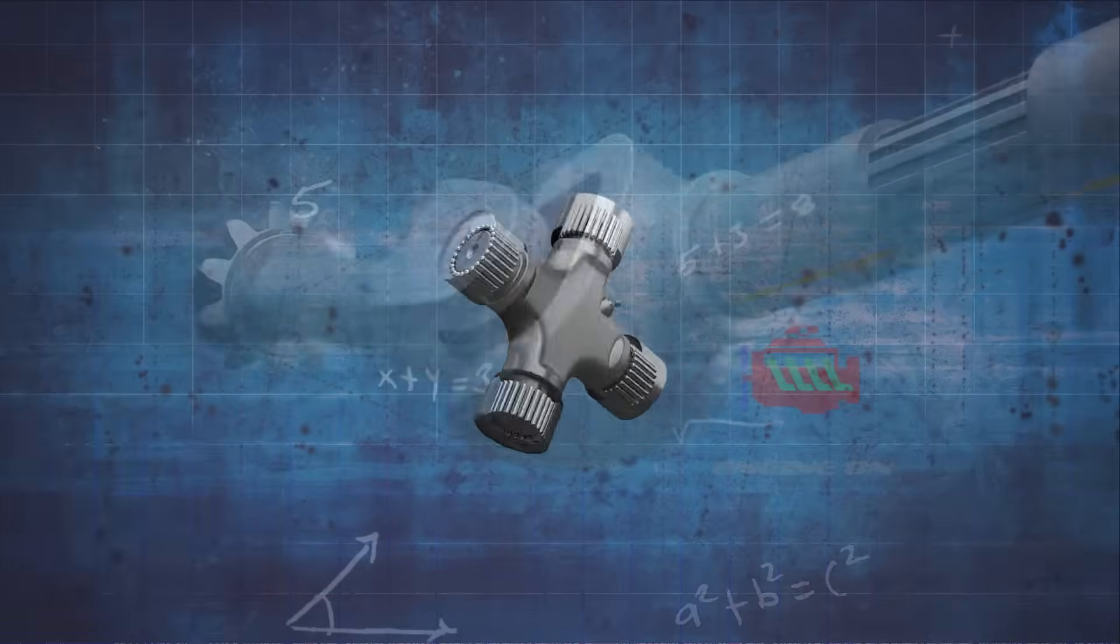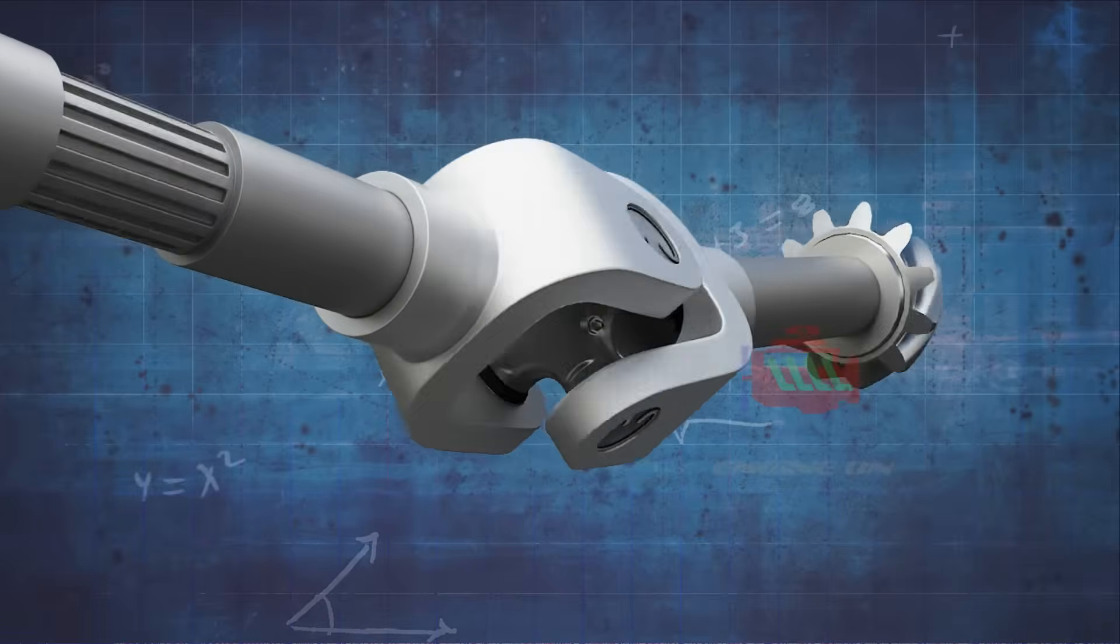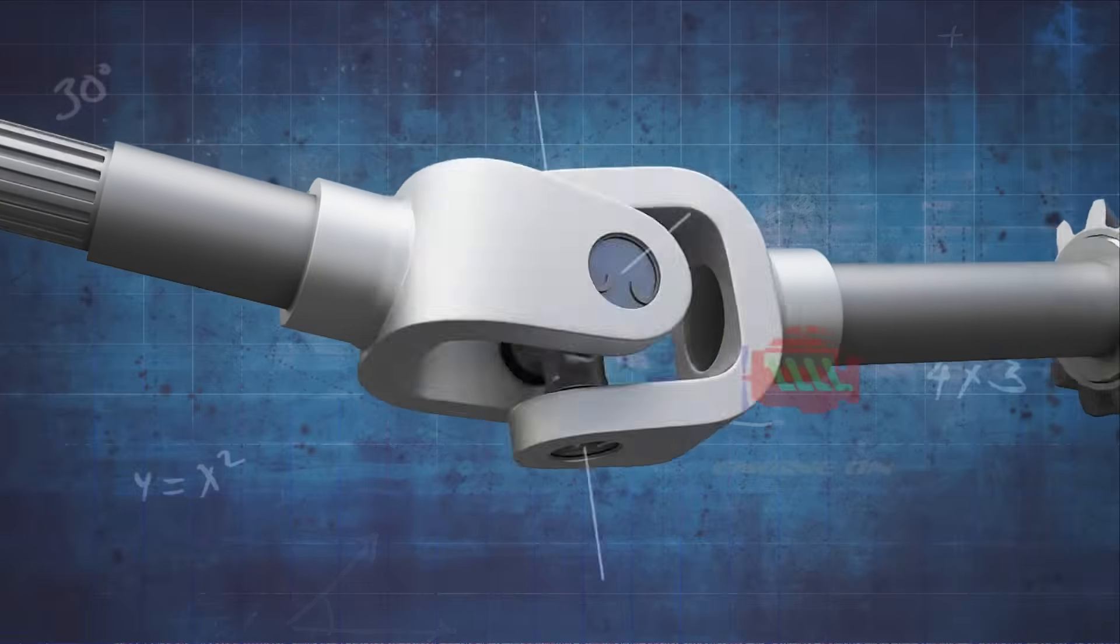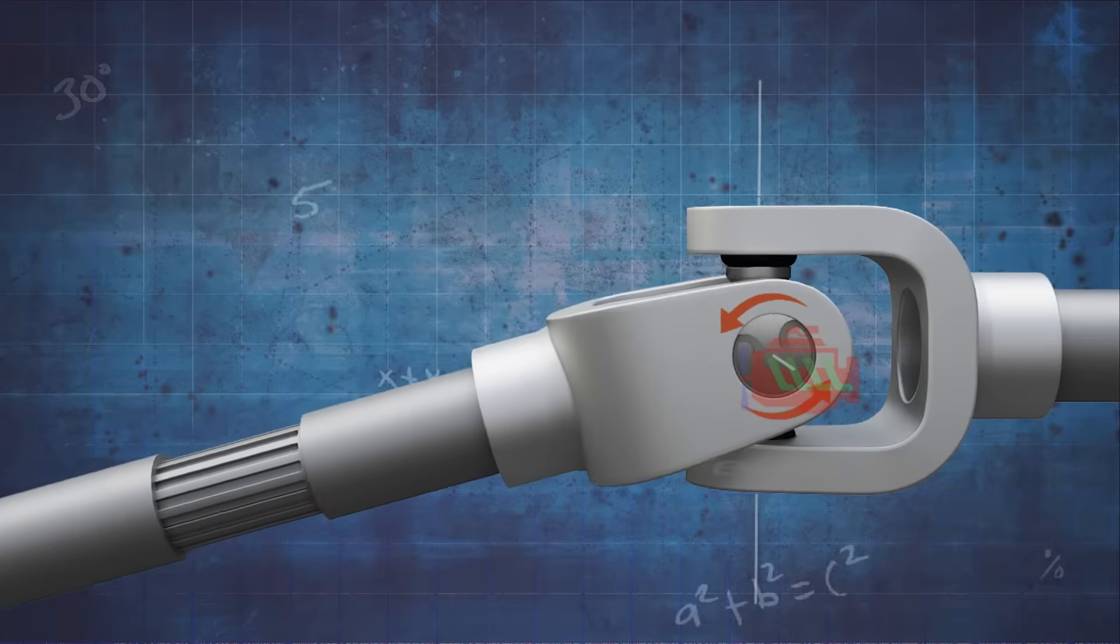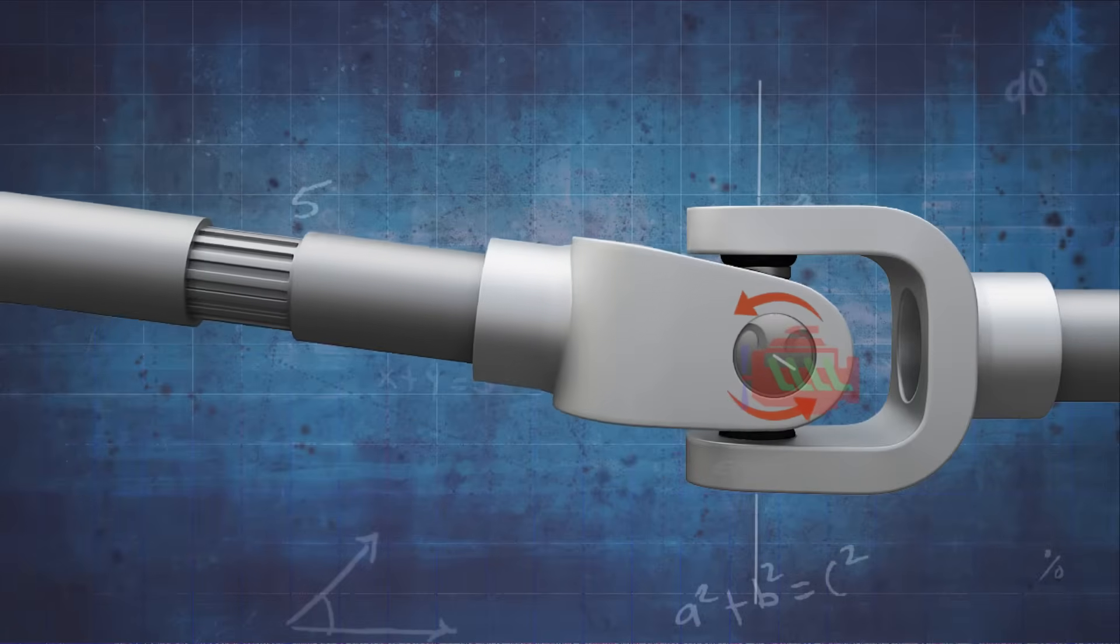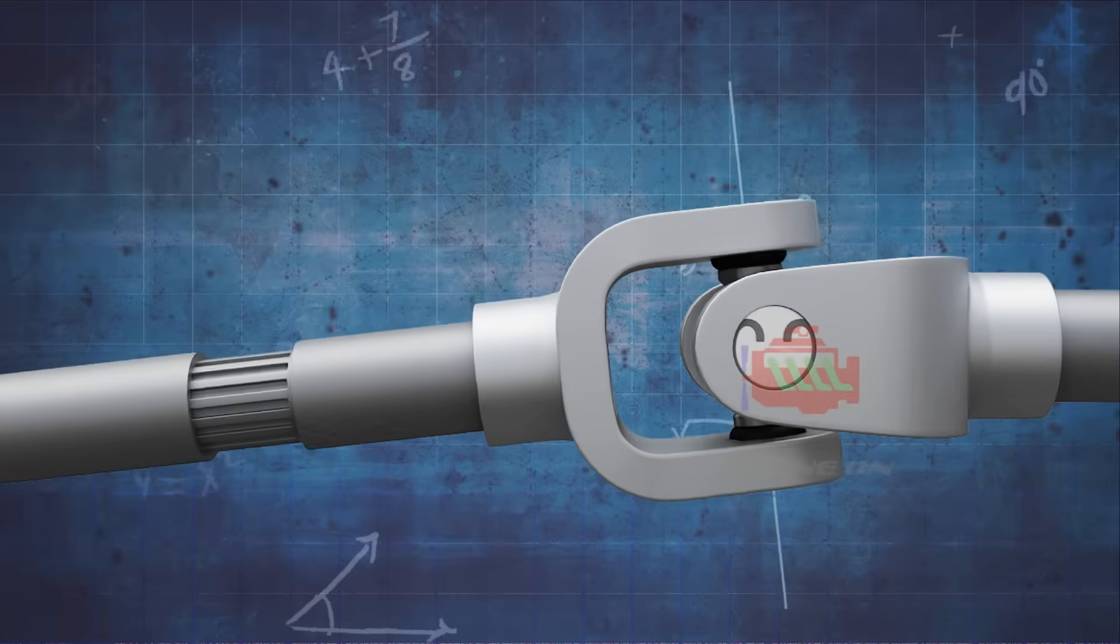It consists of a cross-shaped piece with bearings at each end, enabling the shafts to rotate at different angles while still transmitting power effectively. Primarily used to transmit torque between shafts that are not perfectly aligned, allowing for some degree of angular movement between them.